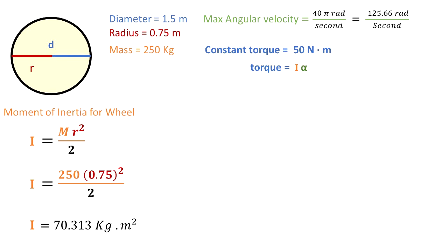Now we can plug in the equation. 50 Newton-meters equals 70.313 kilograms meters squared times alpha. From this, we can solve for the angular acceleration. Alpha is 0.711 radians per second squared. This is our angular acceleration.